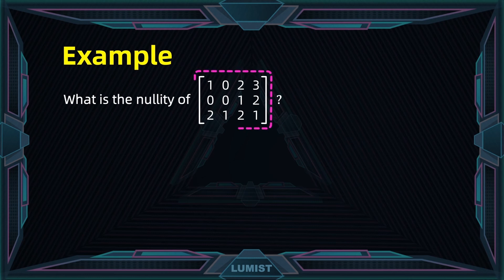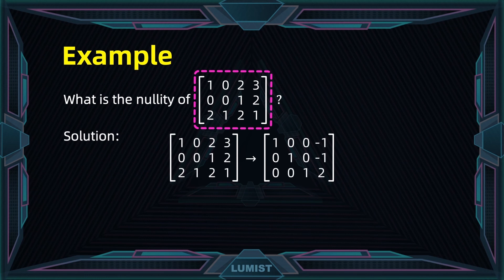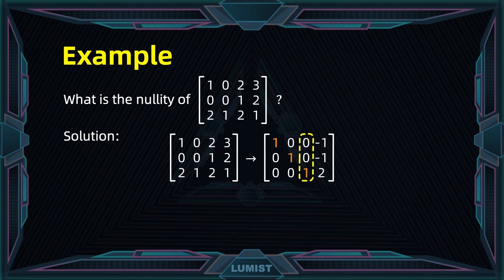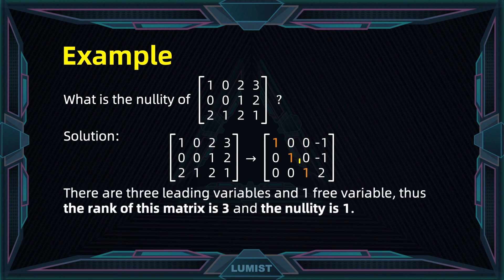Let's see how this works in action. Here we have a 3 by 4 matrix and we can reduce it to its reduced row echelon form. You notice that column one has a leading one, column two as well, and column three as well. That means the rank is equal to 3. On the other hand, you have one free variable corresponding to the last column. That means the nullity is equal to 1.